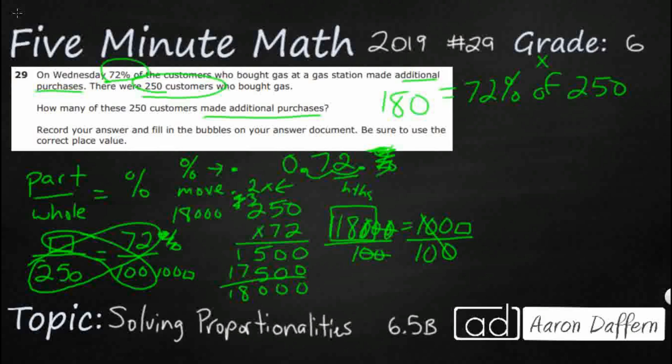And we don't really know how to multiply a percent times a number, but if we turn this into a decimal, and remember, we turn that 72% into 0.72, 0.72 is the same as 72% of 250.